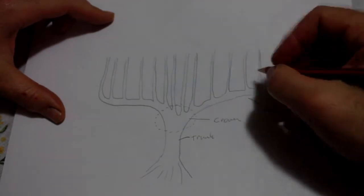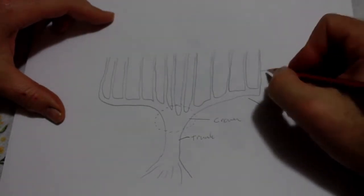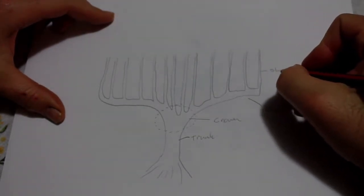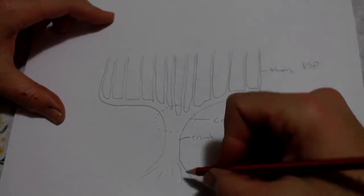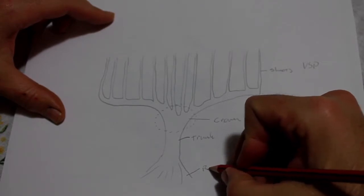Obviously from the cordon come the shoots from this year that carry the fruit, and so we'll label them as such. Now the shoots. Down the bottom here, it's no great mystery, we have the roots.